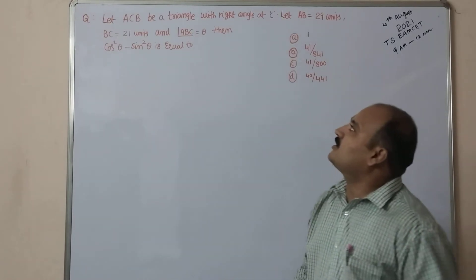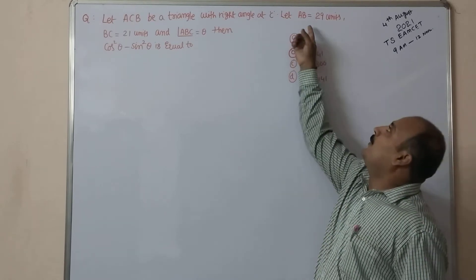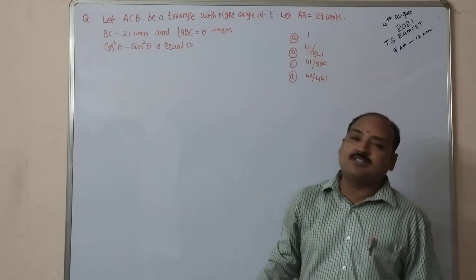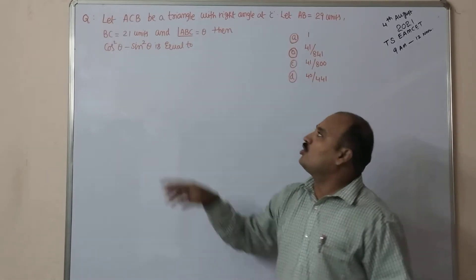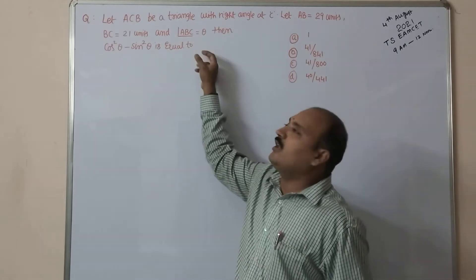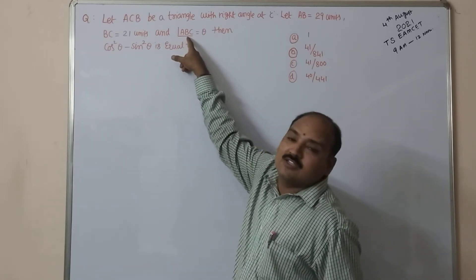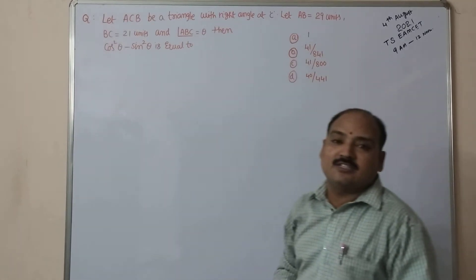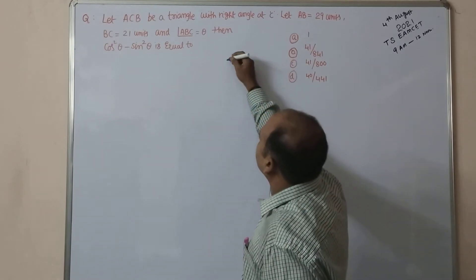The next question: Let ACB be a triangle with right angle at C. Let AB equal to 29 units, BC is equal to 21 units, and angle ABC equal to theta. Whenever angle ABC is equal to theta, they mention middle one is having the angle. Then cos²θ - sin²θ, that is to see. Here, the figure I am drawing according to the question.